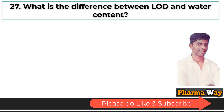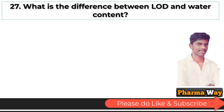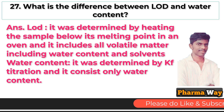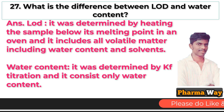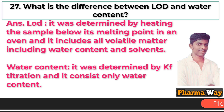What is the difference between LOD and water content? Answer: LOD is determined by heating the sample below its melting point in an oven; it includes all volatile matter including water content and solvents. Water content is determined by KF titration and consists only of water content.